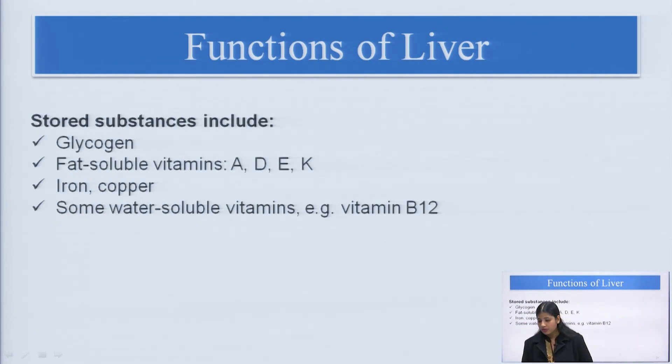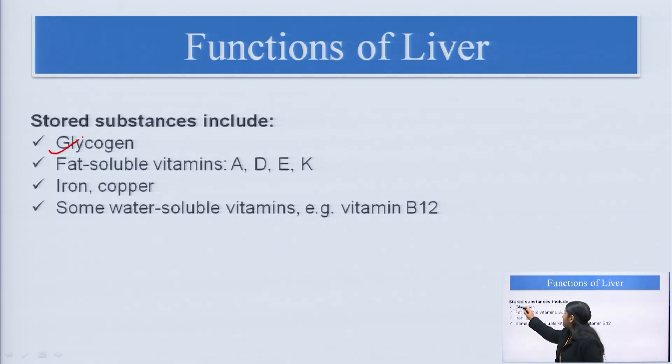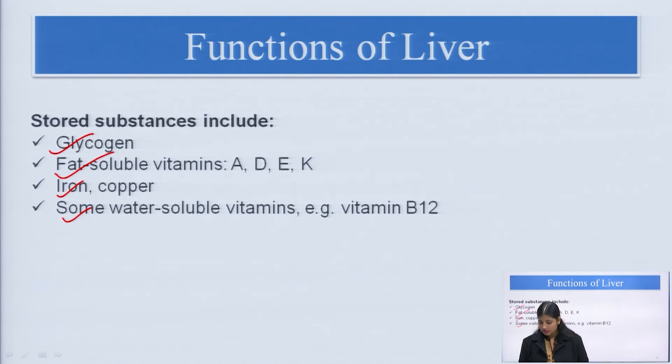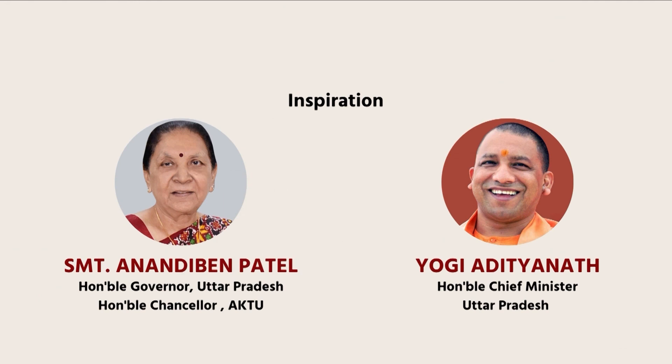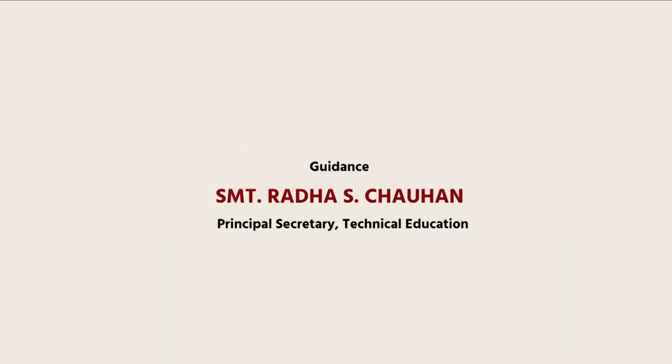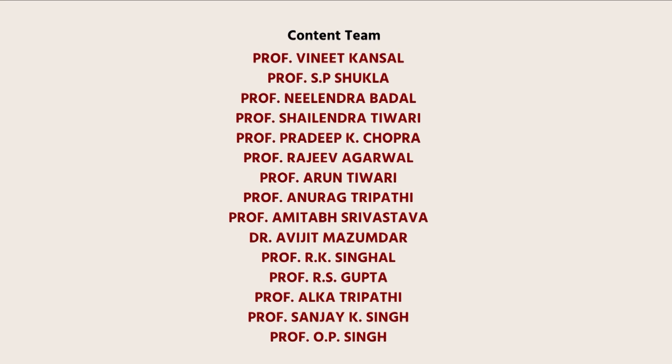The liver is a very important organ. Apart from its functions, it also stores substances such as glycogen, fat-soluble vitamins, iron, copper, and some water-soluble vitamins. We have covered the anatomy, functions of all the accessory organs in this lecture. We will meet in the next session of the digestive system. Thank you.